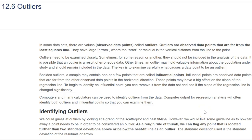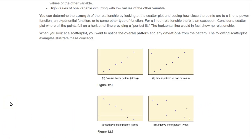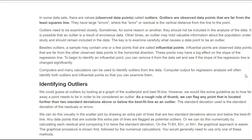This is our last lesson for this chapter, and you've already been exposed to an outlier. An outlier is just a point that is pretty far away from the least squares line. Back in 12.2, when we were first talking about positive relationships, we had a graph where most points were close to a line, and then there was this one point way out. This is an outlier — it is not close to the line but is part of the data set. The residuals are very large.